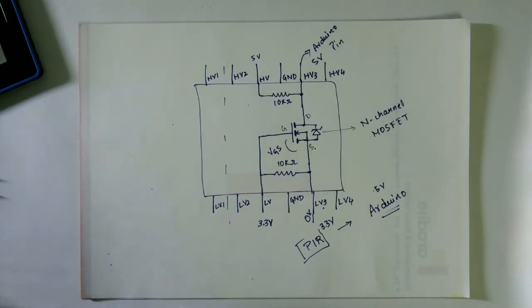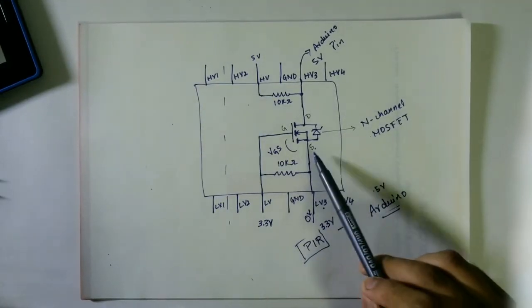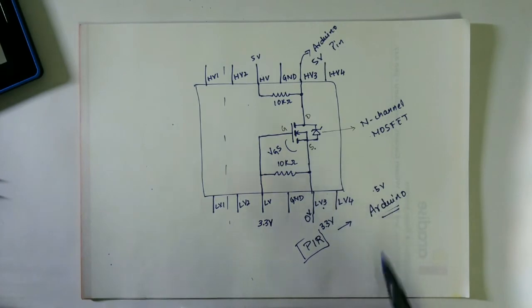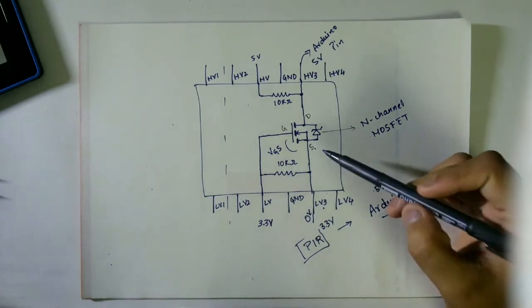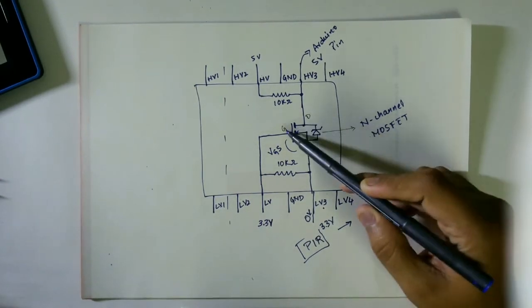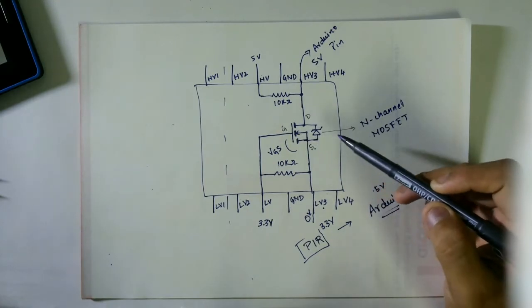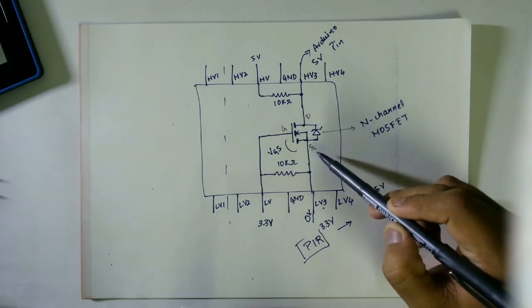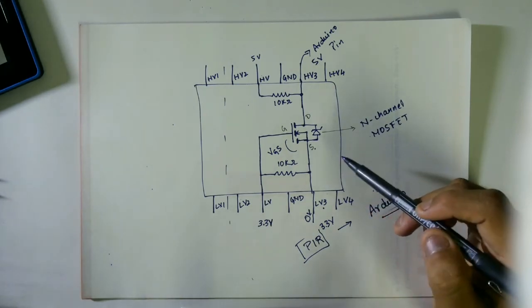Here as you can see this is an N-channel MOSFET, metal oxide semiconductor field effect transistor. So it is actually a four terminal device. It consists of source, drain, gate, and the other terminal is the substrate. Substrate is usually connected to source, so it will be a three terminal FET.